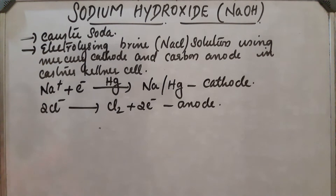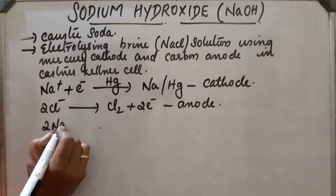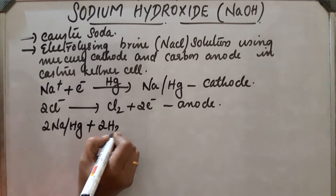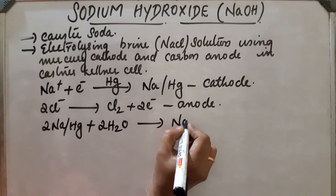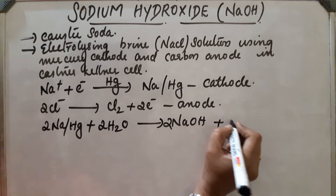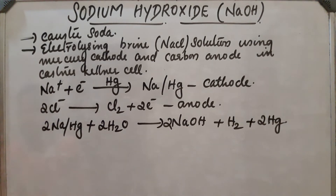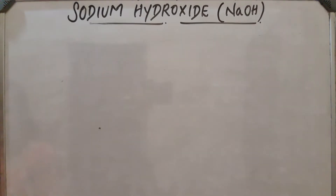The sodium amalgam formed then comes in contact with water, and gives sodium hydroxide and H₂ gas. So sodium amalgam plus 2H₂O gets converted into NaOH, H₂ gas, and mercury. This is how sodium hydroxide is manufactured using the Casner Kellner cell.